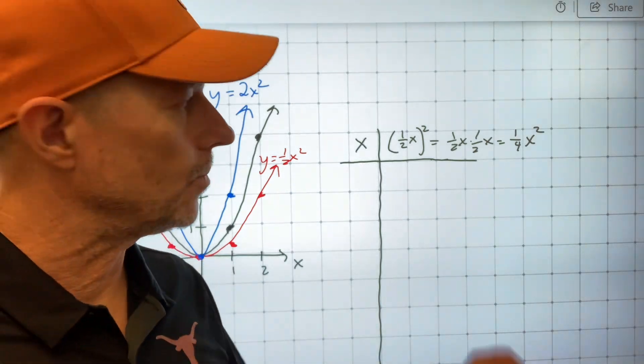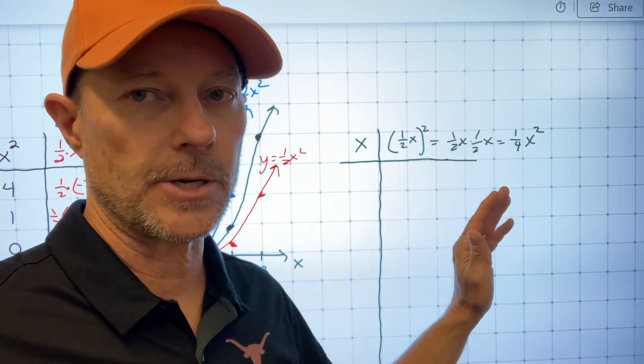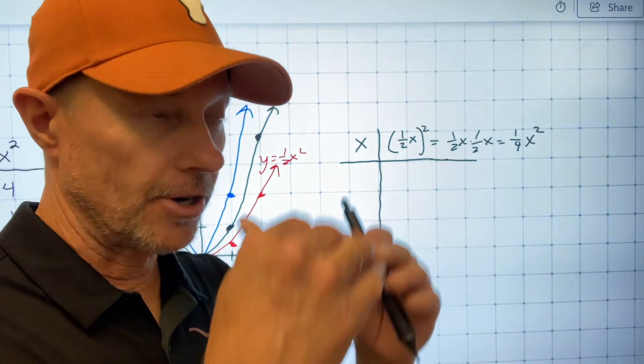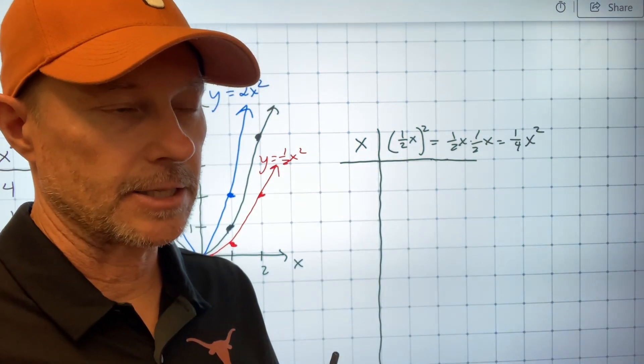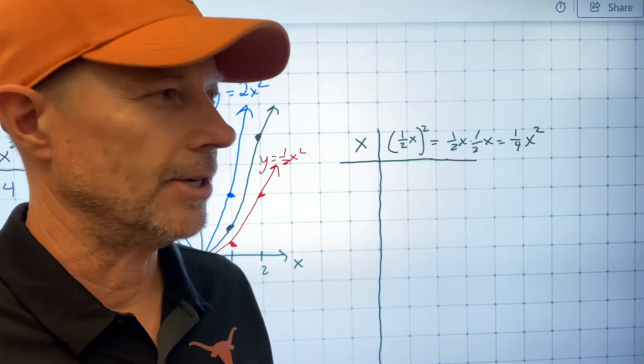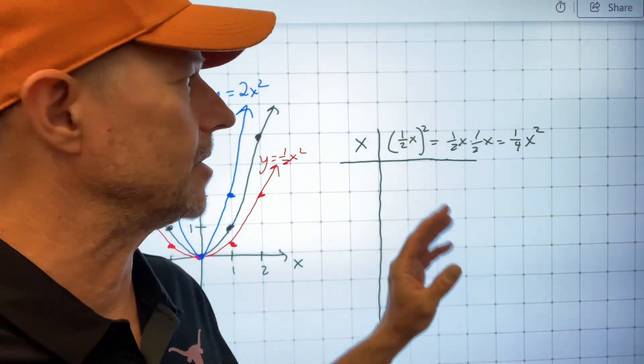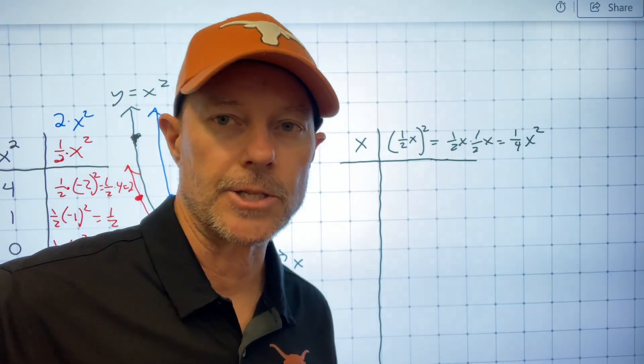So you can visualize horizontal stretches and compressions just like you can vertical. Instead of moving further away or closer to the x-axis, the points move further away or closer to the y-axis. But it's just easier many times, not always, but many times it's easier just to turn it into a vertical stretch or compression.